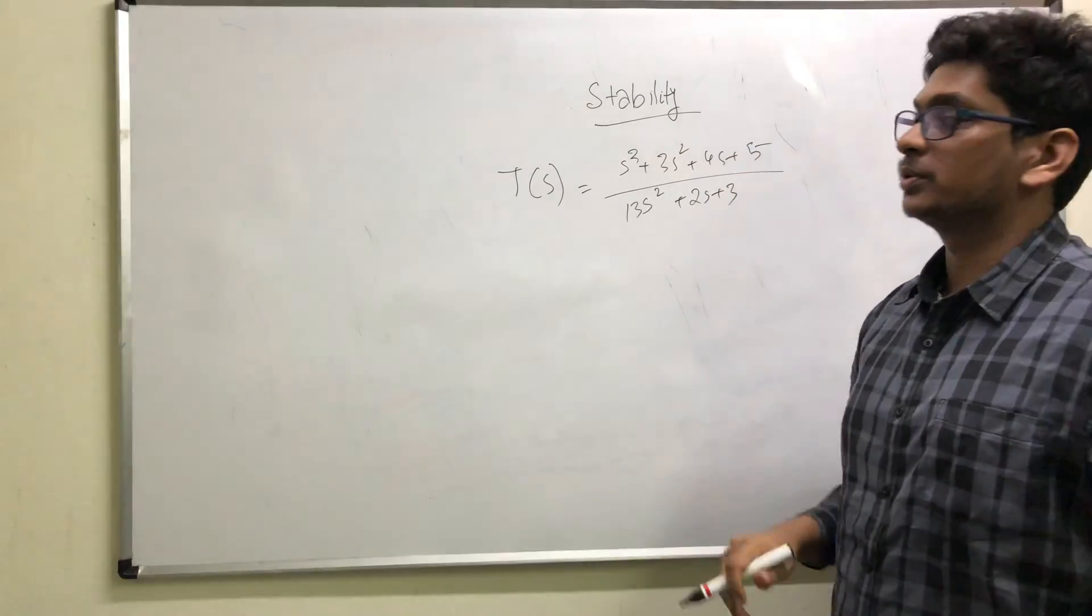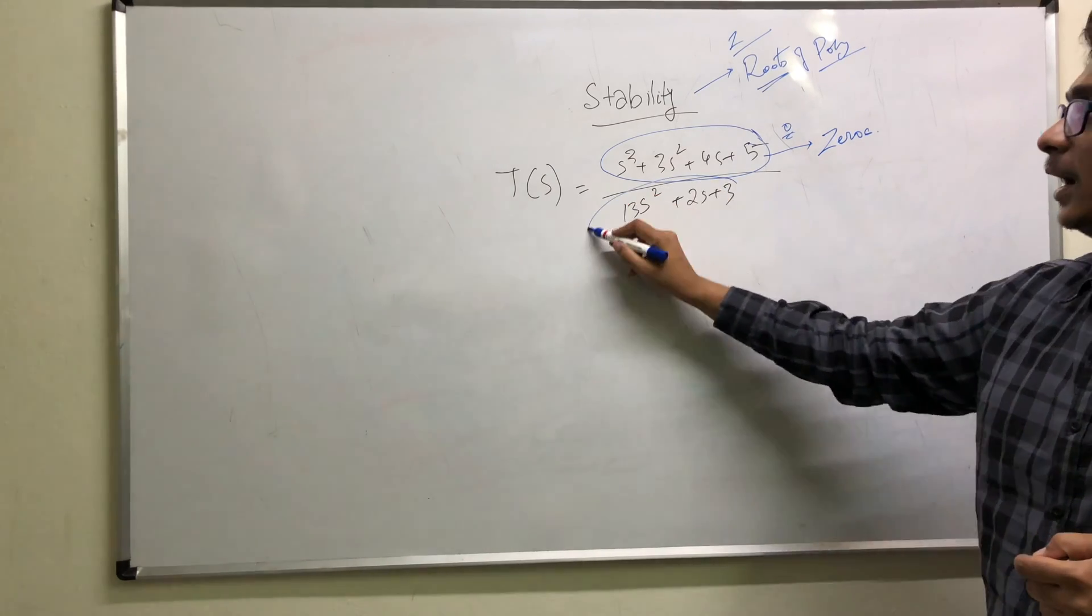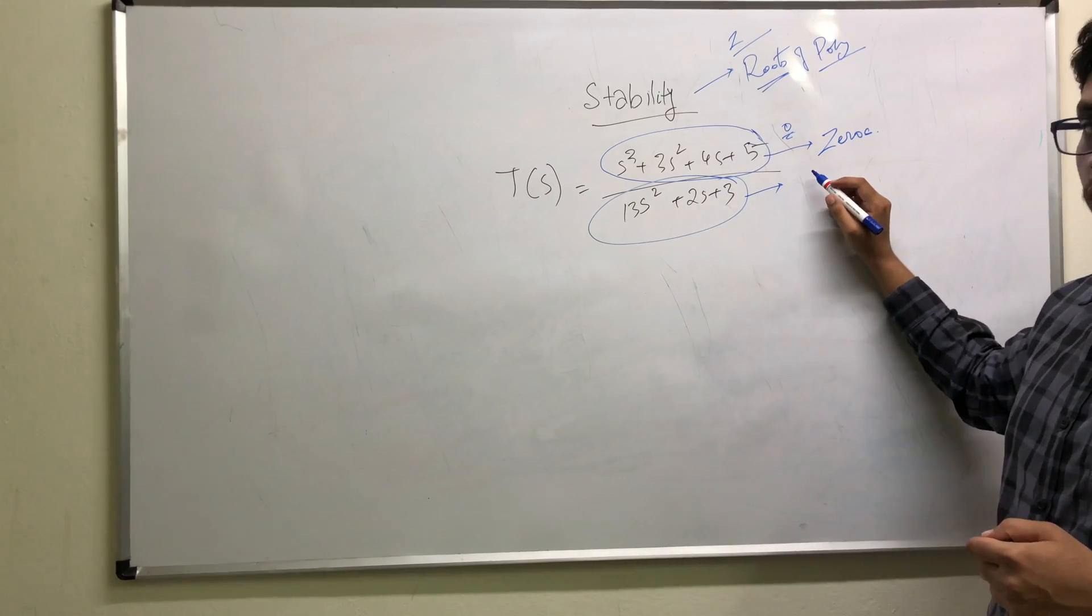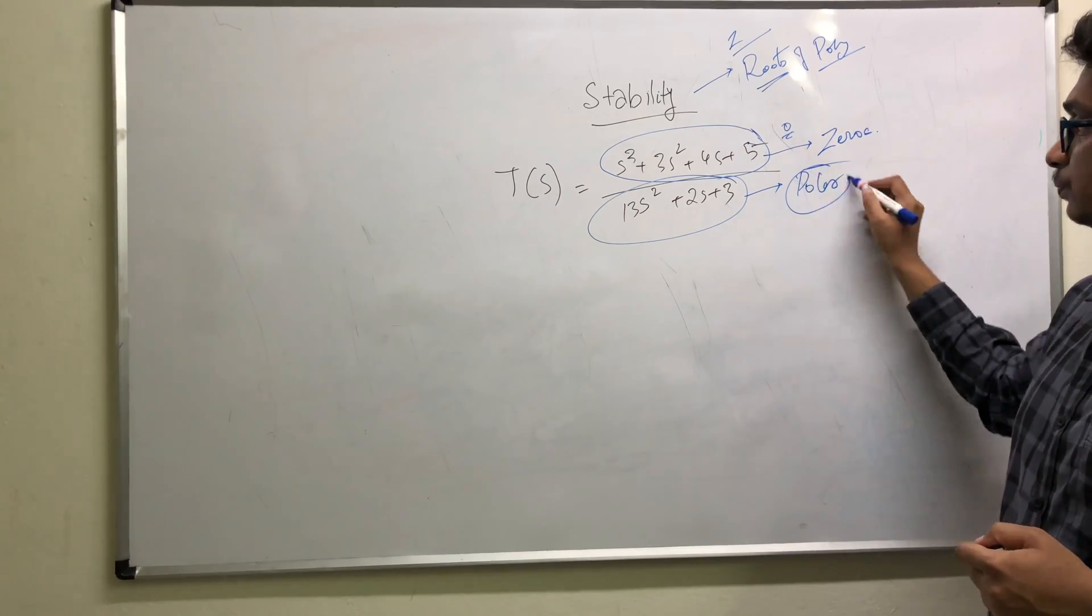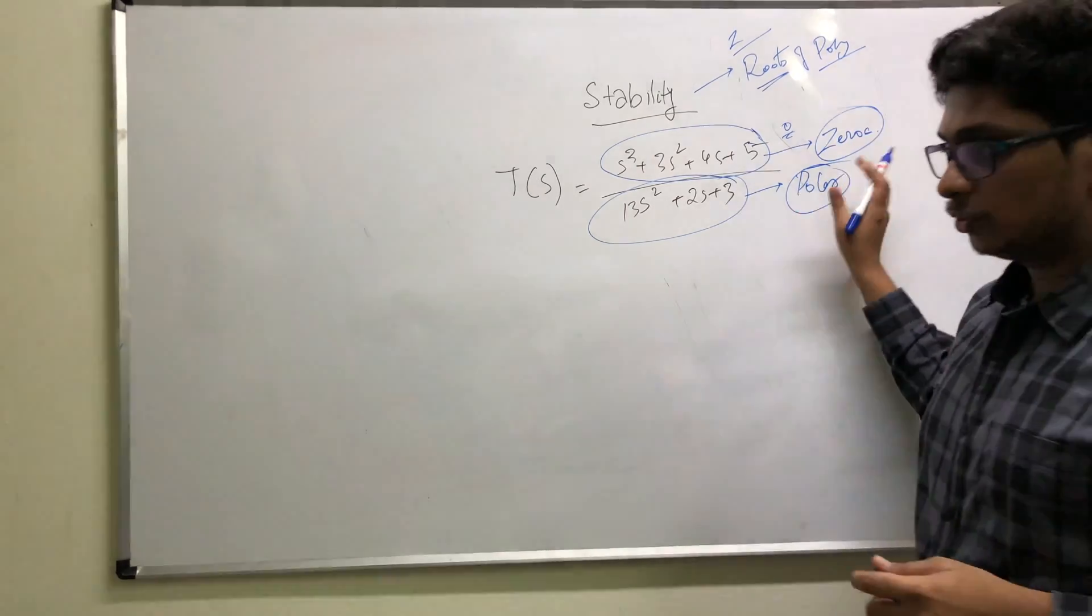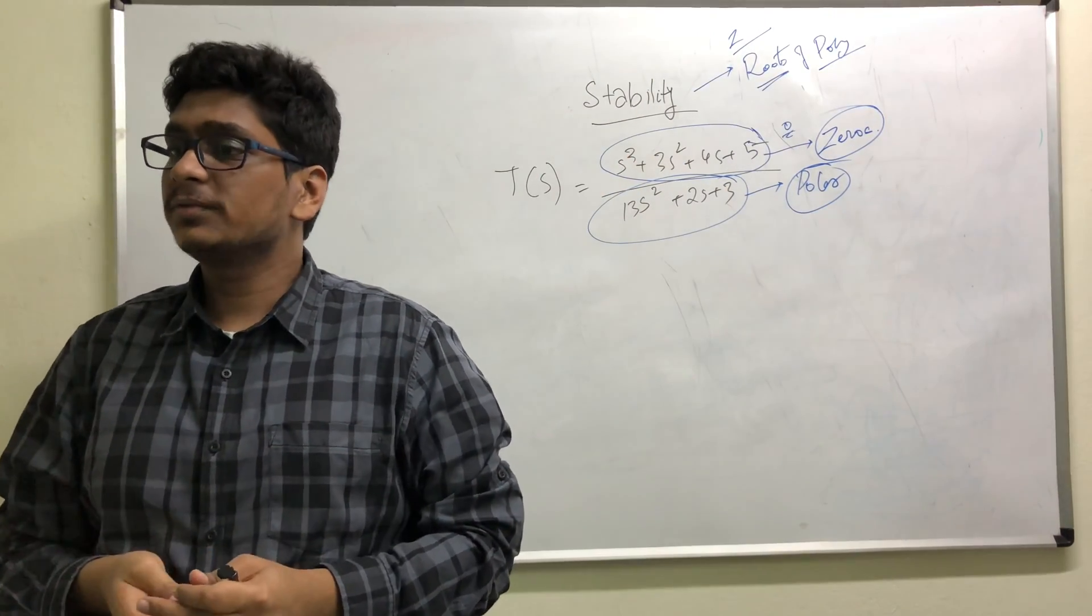The roots of the numerator are called zeros, and the roots of the denominator are called poles. Zeros and poles of a transfer function - this is a very basic thing.